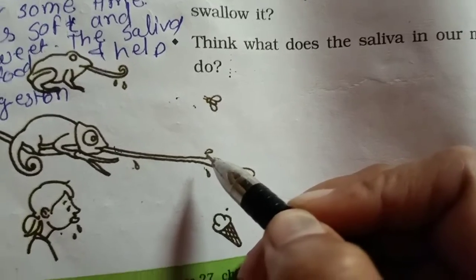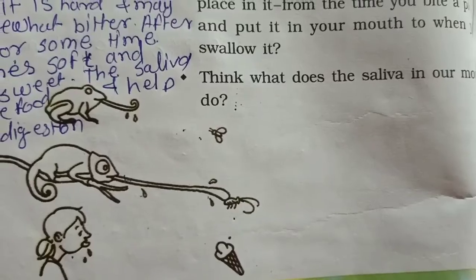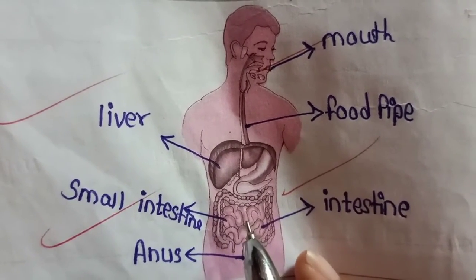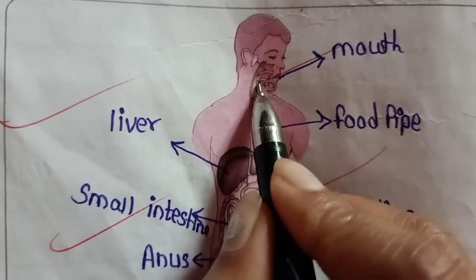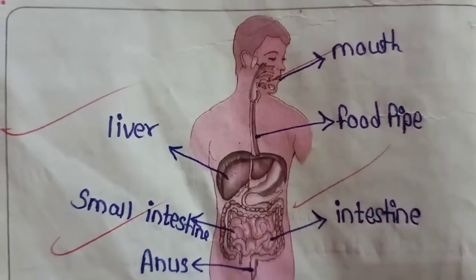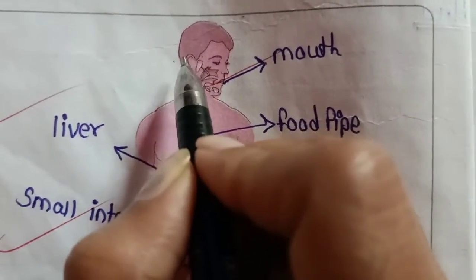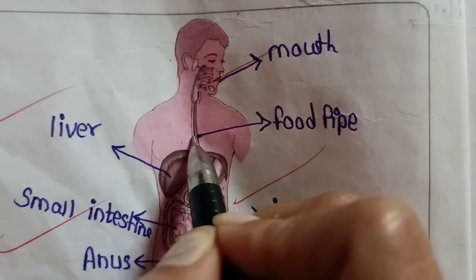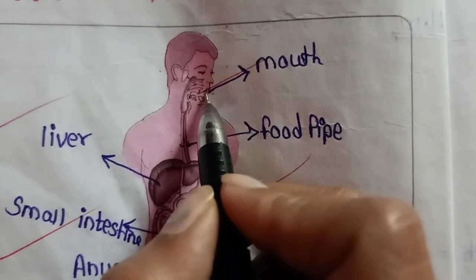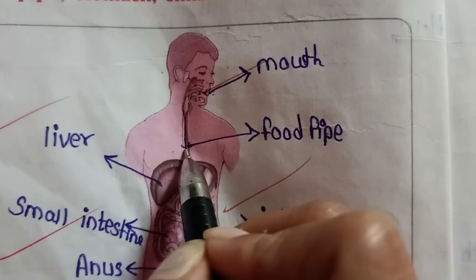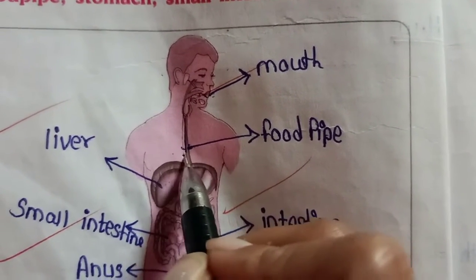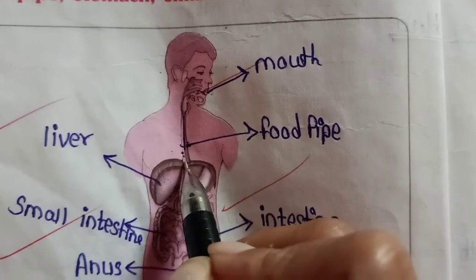After entering the stomach, food gets digested and we get energy. Now we will understand the digestive system. The function of the digestive system — where do you think the food goes after you put it in your mouth and swallow it? When we eat food, it enters our mouth and goes straight into the stomach through a long pipe, which is called the food pipe. This system is called the digestive system.